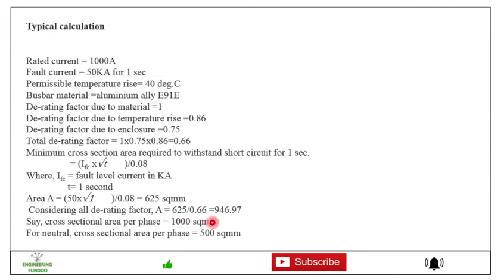So that will be 1000 square mm. For neutral, cross section area per phase will be 500 square mm. So this is how it is calculated. So there are a number of ways by which you can calculate the busbar sizes. One is thumb rule, then you can also apply a formula, then you can calculate temperature rise also. There are a number of derating factors also available as per the standard, and that also you can consider for calculating this size.